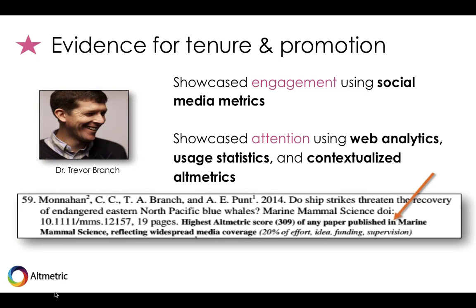Some examples of why you might use this beyond knowing if your promotion activities are effective — for example, if you're looking for evidence to use in tenure and promotion applications. Here we have Dr. Trevor Branch, who works at a university that has a public engagement requirement for people going up for tenure. He does a lot of online outreach and has looked at the altmetrics for his paper and used them to showcase the positive effects of those efforts. He's not only featured the altmetrics score of his paper but also given it additional context by showing how it compares to other research published in the same journal and where that attention has come from — in this case, widespread media coverage.